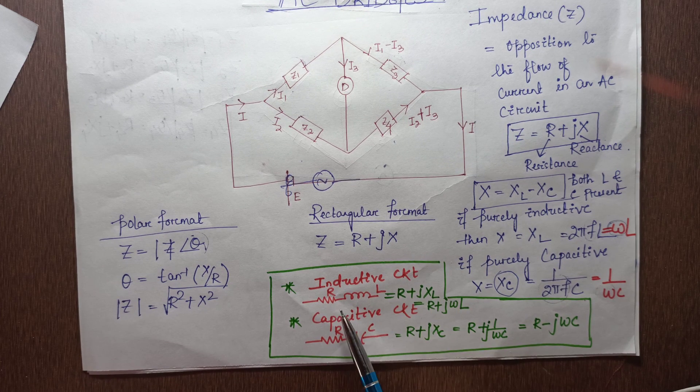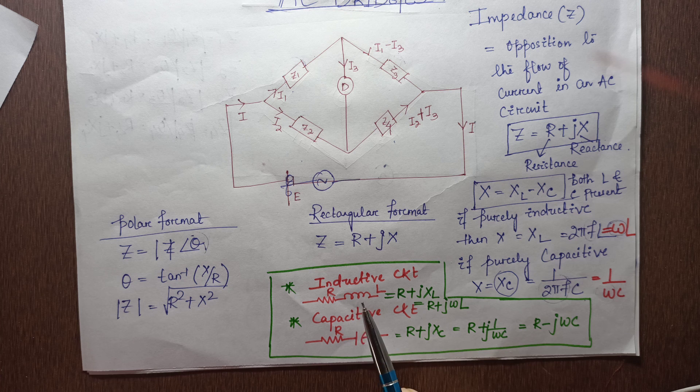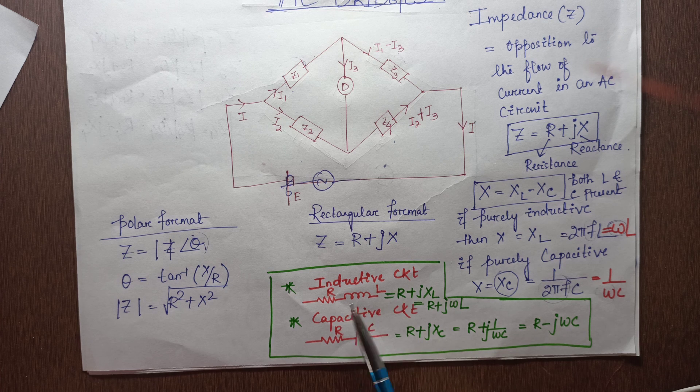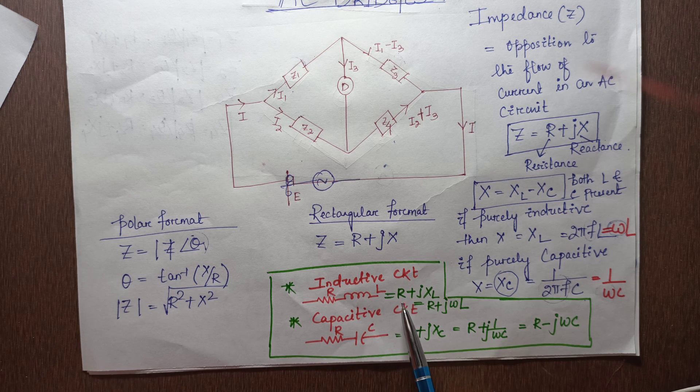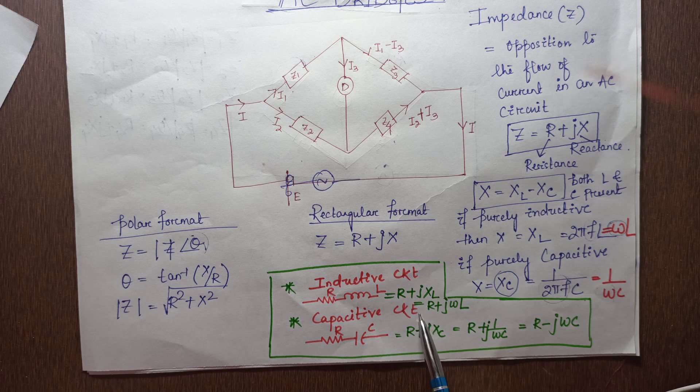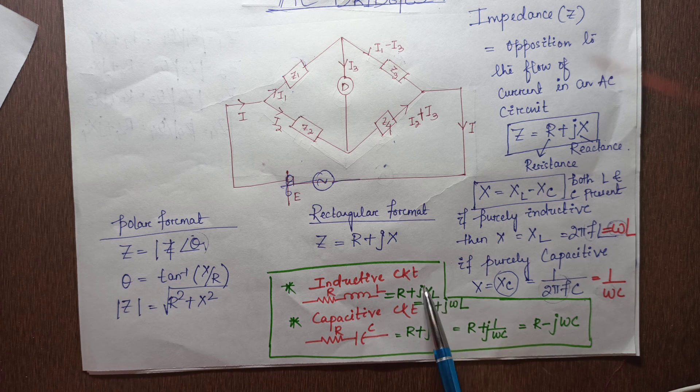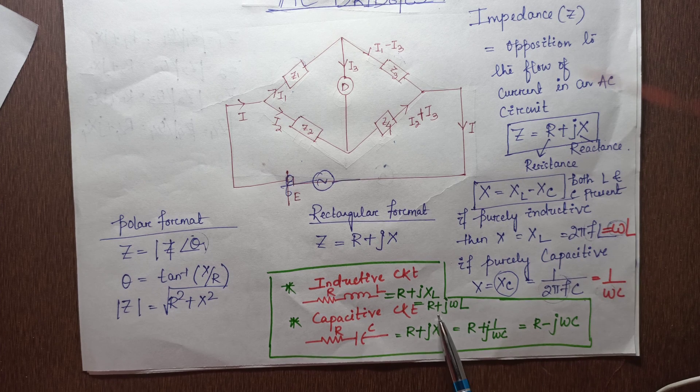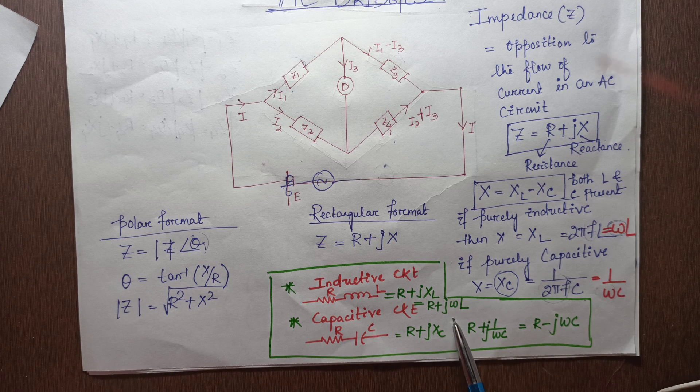When we come across a circuit which consists of resistance as well as inductance, it is represented as R + jXL, which is also equal to R + jωL.